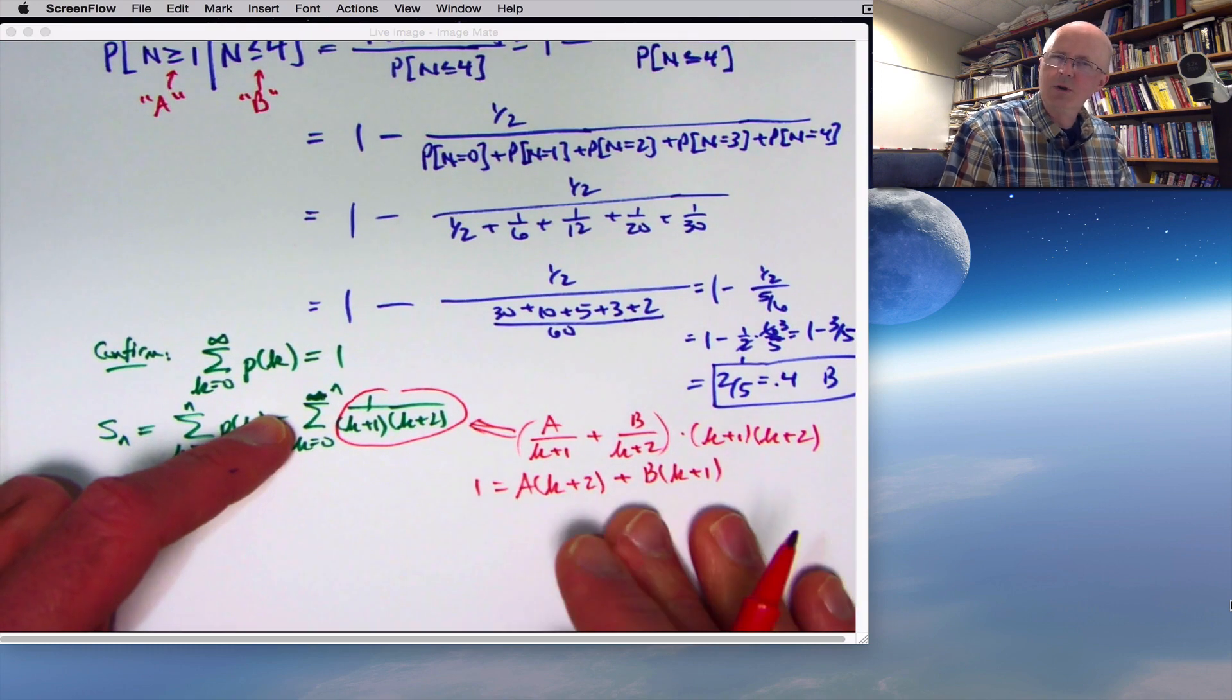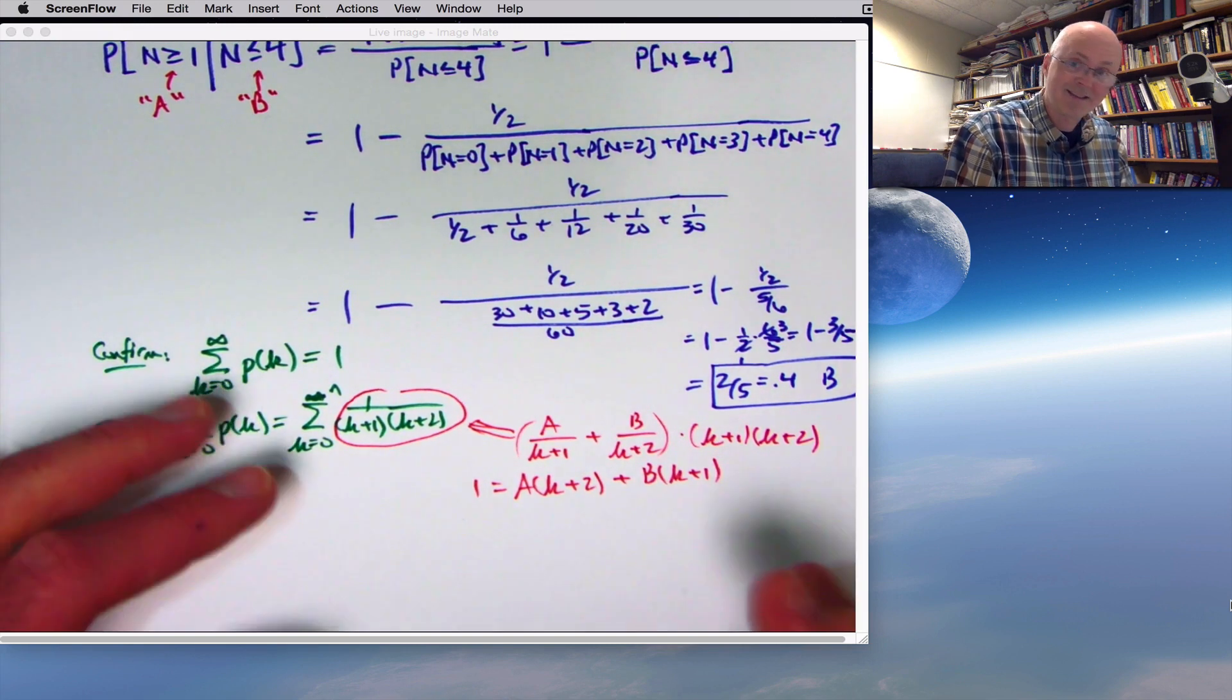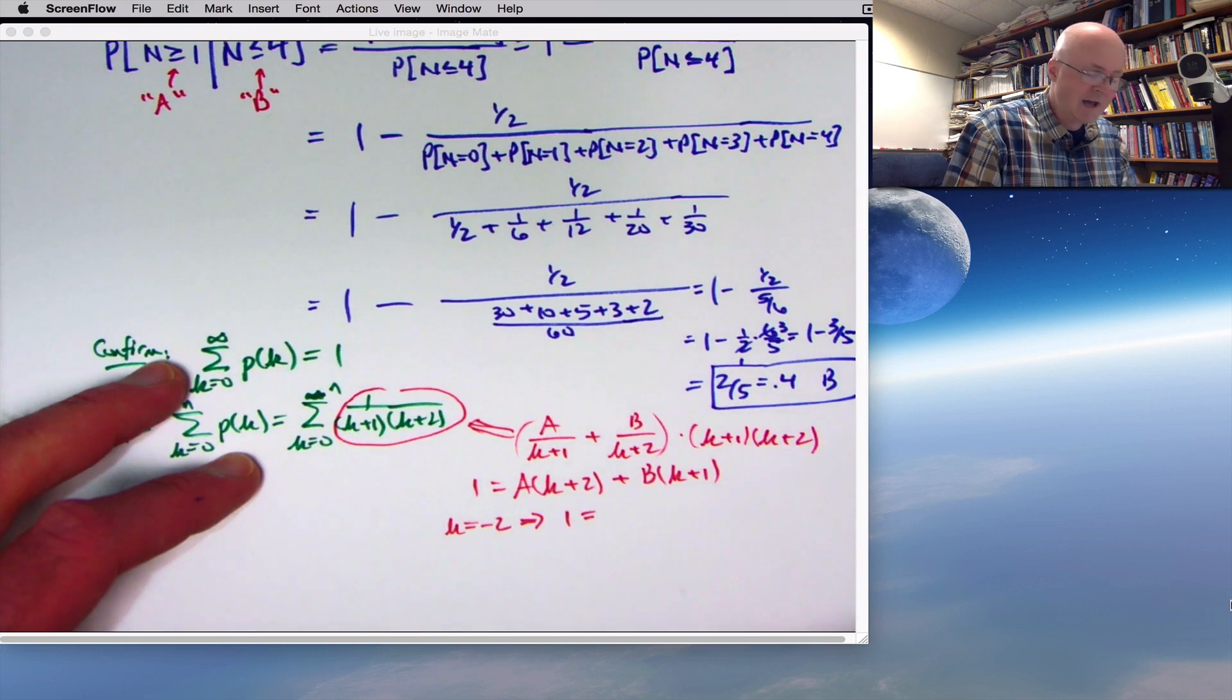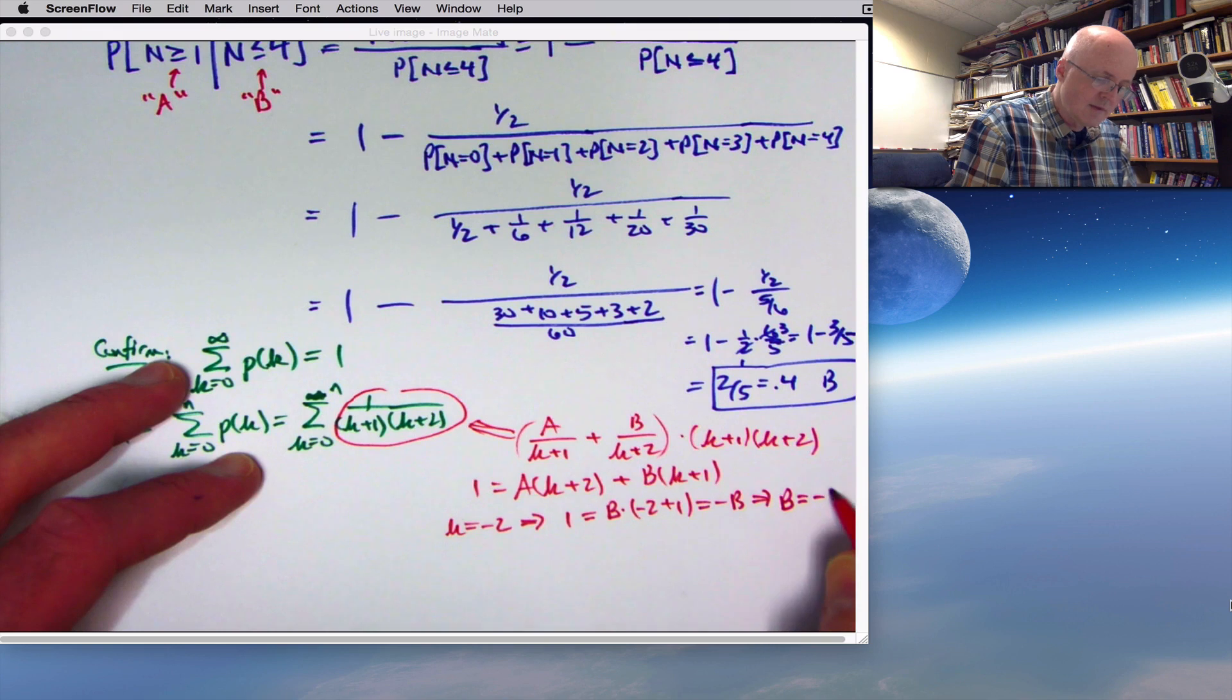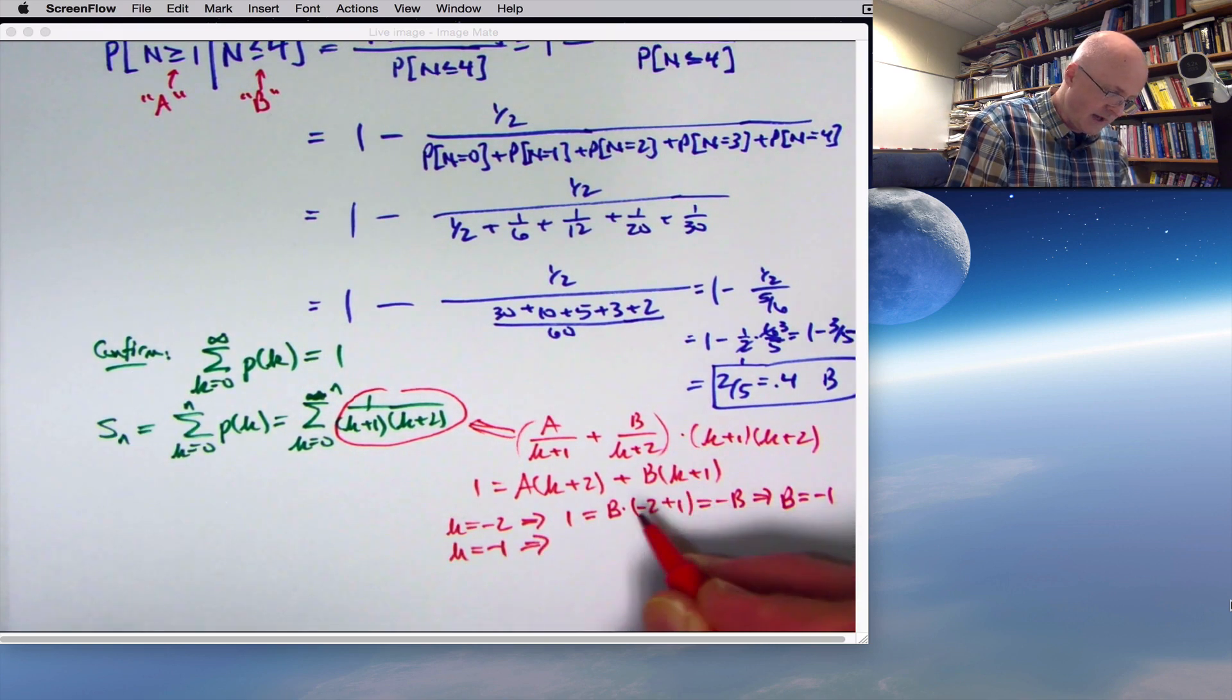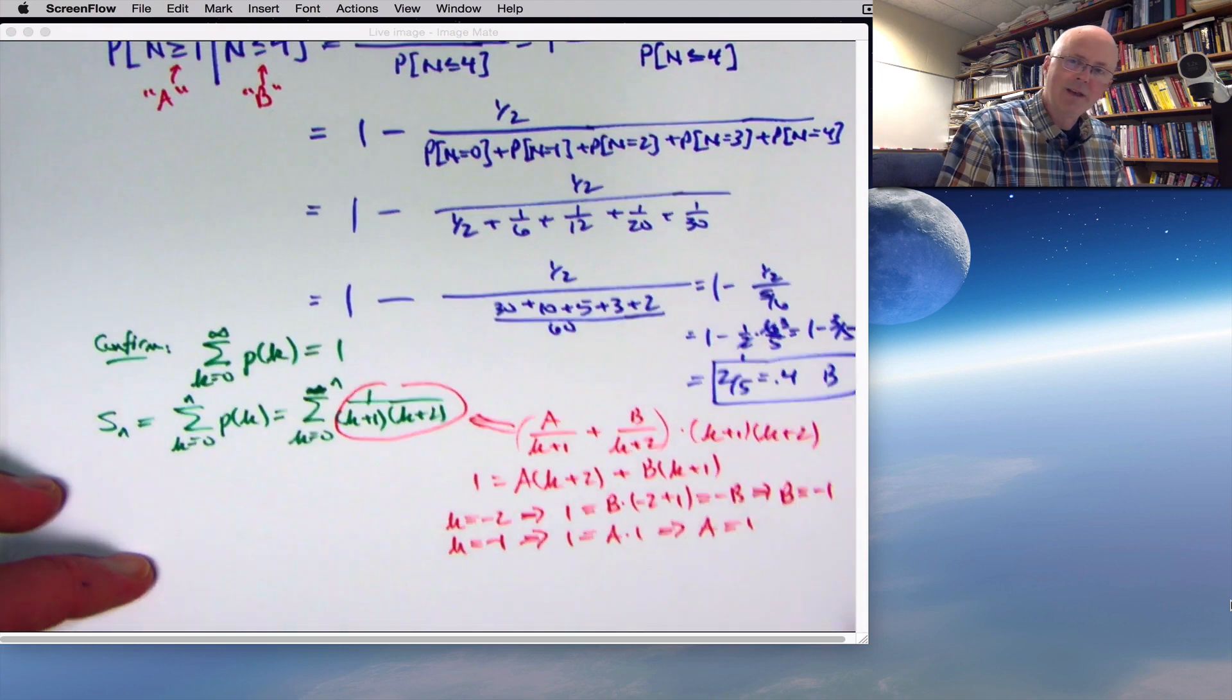Now, you want this to be true no matter what k is. Plug in special values of k that make it easiest to solve for a and b, like negative 2 and negative 1. Now, if you replace k with negative 2, this term goes away. You're left with b times negative 2 plus 1 is b times negative 1, so b must be negative 1. And when you replace k with negative 1, now that term goes away and you're left with a. 1 equals a times negative 1 plus 2 is 1, so a must be 1. Now, it's a little fishy because, technically speaking, this fraction here and these two, these functions are undefined when k is negative 1 and negative 2, the original things here.